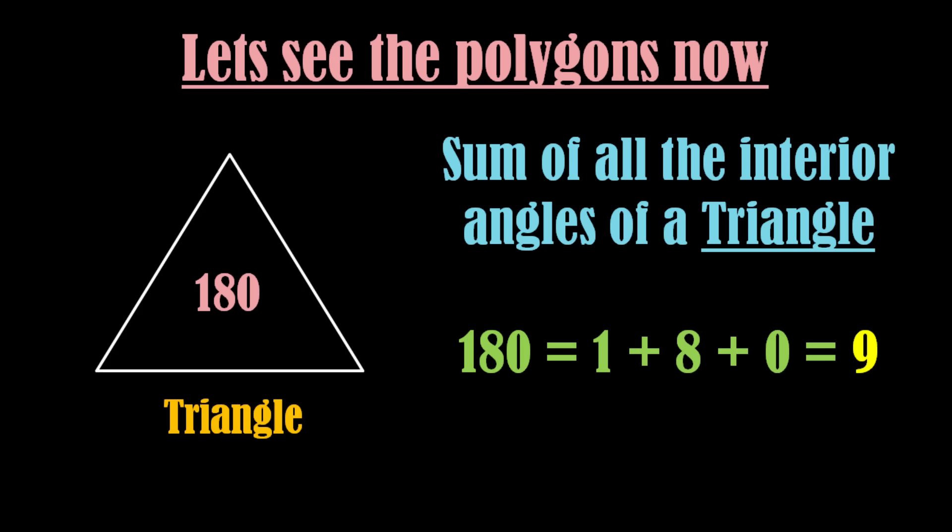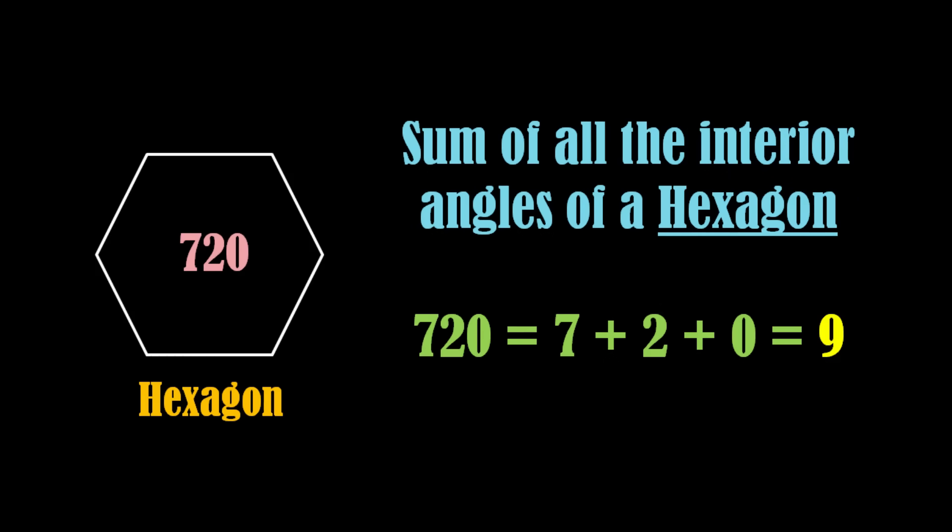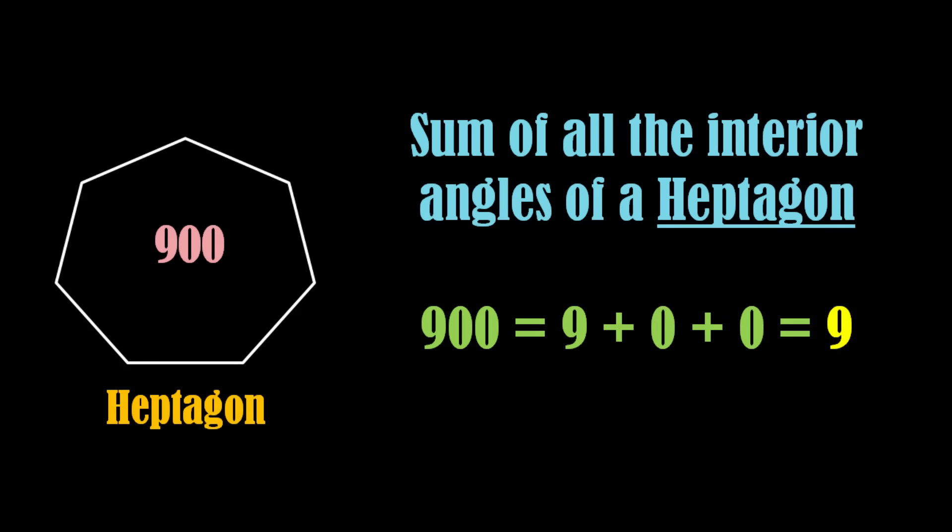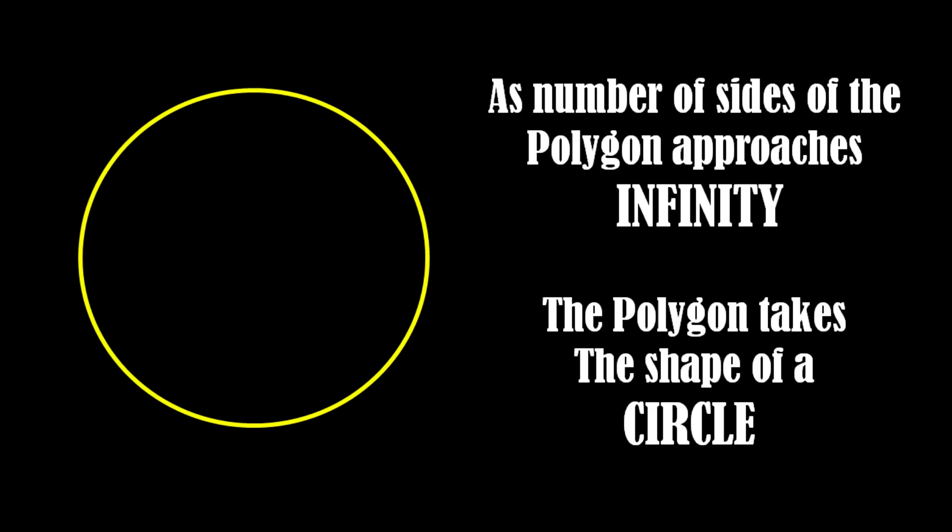And when we were increasing the number of sides of the polygon, the polygon was looking like a circle. As the number of sides of the polygon approaches infinity, it becomes a circle. As in all the polygons, we got number 9. It means number 9 also follows space up to infinity.